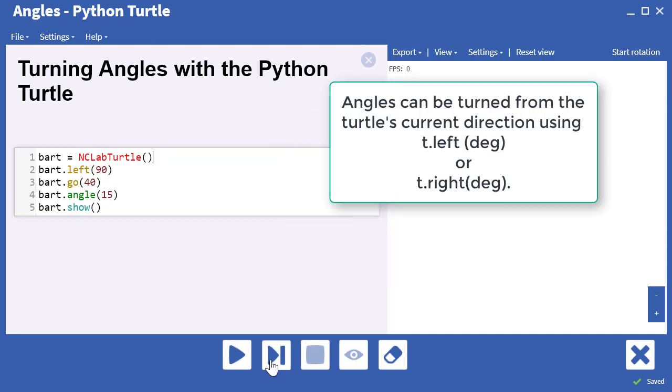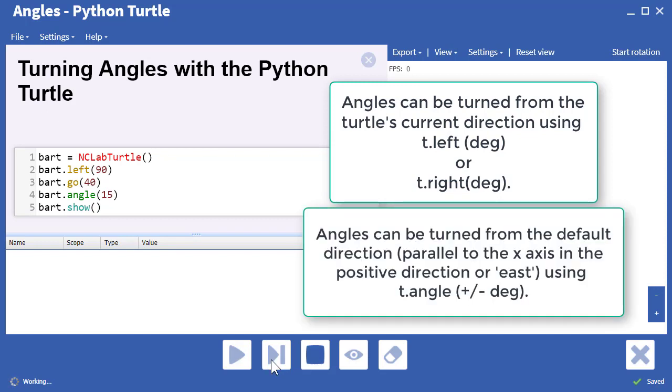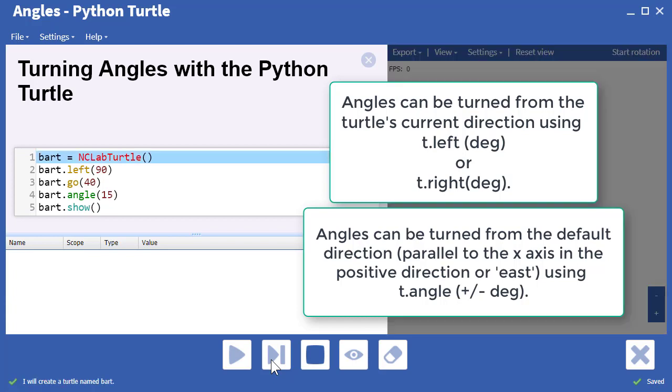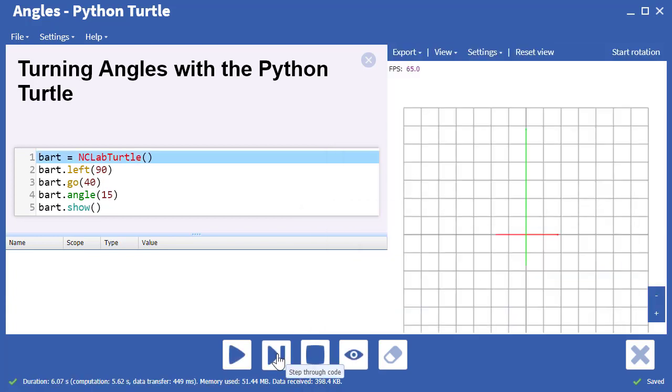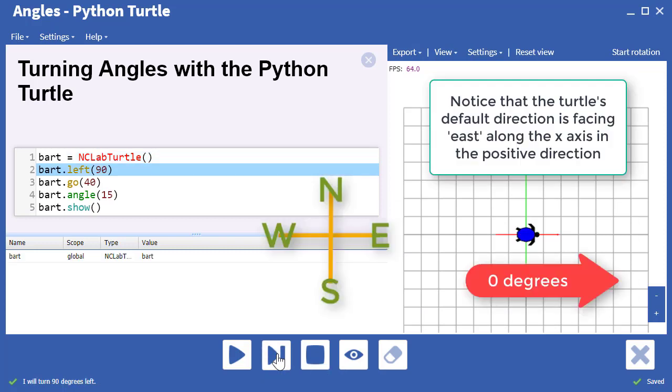Angles can be turned from the turtle's current direction using left or right in degrees. Angles can also be turned from the default direction using the angle command. The default direction faces east along the x-axis in the positive direction.